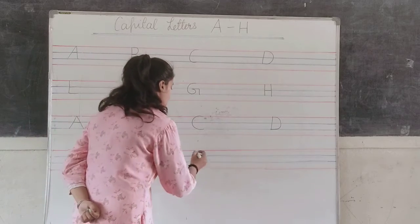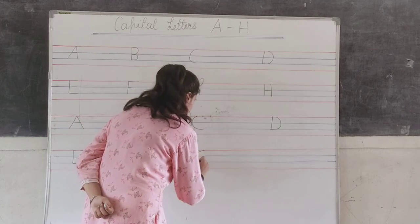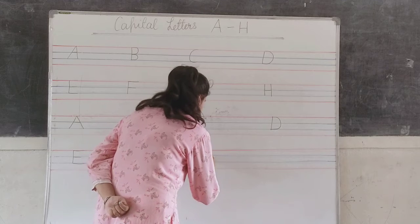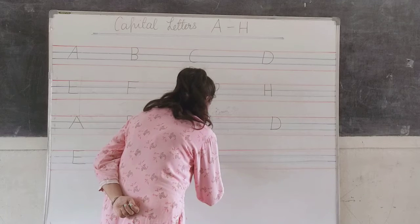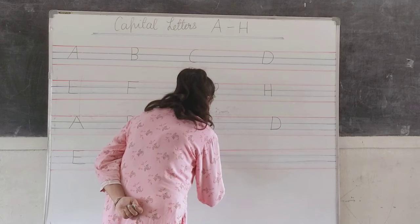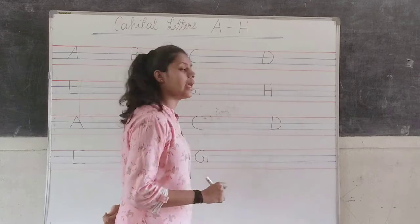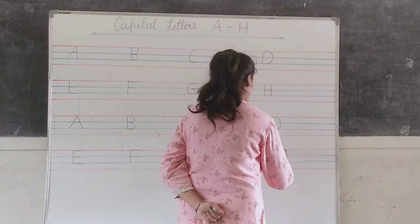G for grapes: one curve, move your pencil to the sitting line, one sleeping line, and one standing line. H for horse.